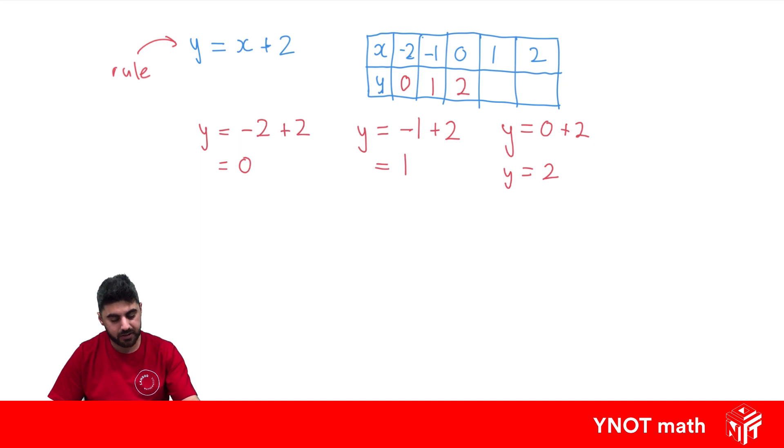You might be able to see a pattern here. 0, 1, 2. You might guess what the next one might be. But if x equals 1 we're going to have 1 plus 2, so y is going to be 3. And for linear relationships like this there is always going to be a pattern. Let's just confirm. So when x is equal to 2 we're going to have 2 plus 2 which is 4. And as expected we get 4 there.